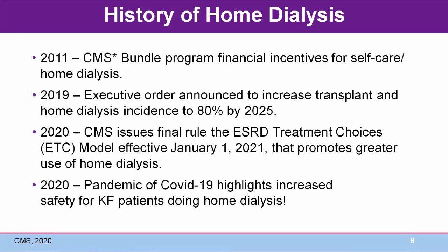In 2011, to promote the benefits of self-care programs, the Center for Medicare and Medicaid Services introduced a bundle of financial program incentives for self-care by waiving the three-month waiting period for Medicare eligibility for PD and increasing the professional training reimbursement for home hemodialysis. Most recently, in 2019, an executive order was announced to increase the number of incident patients who could benefit from home therapies and transplant.